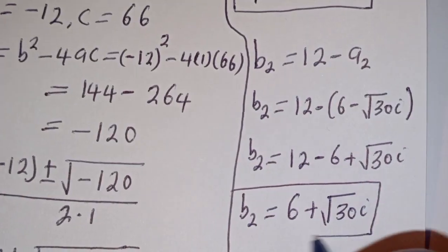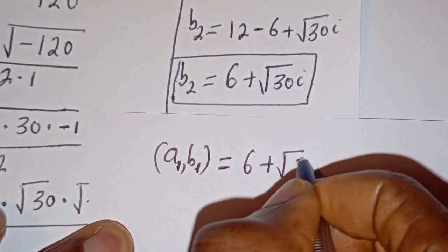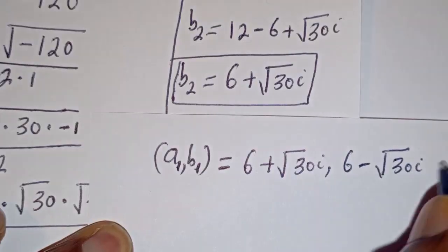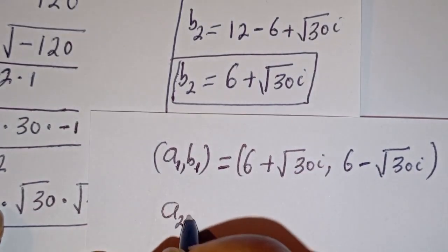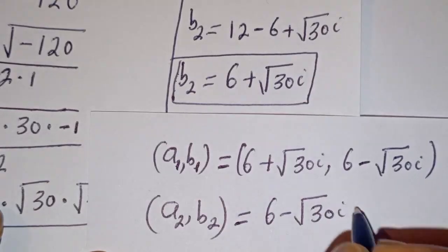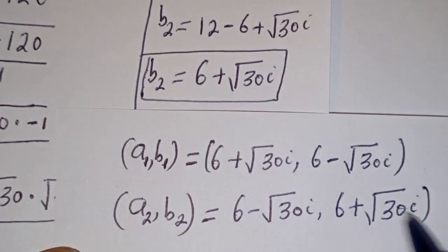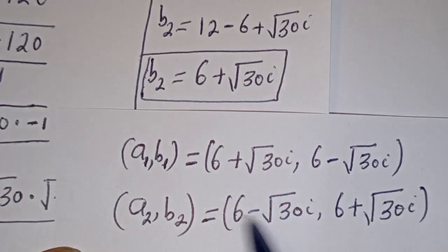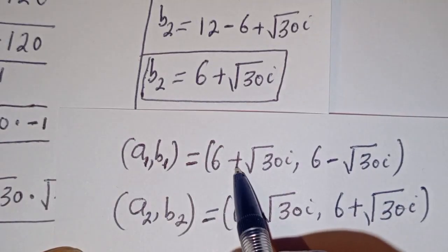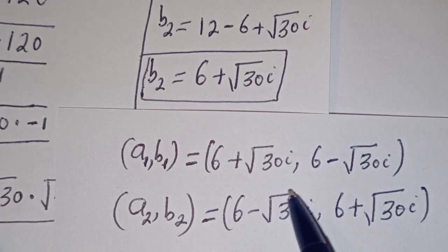So A1 equals 6 plus square root of 30 i, and B1 equals 6 minus square root of 30 i. We can see that the value of A1 is equal to the value of B2, and the value of B1 is equal to the value of A2. Let's check to confirm if this answer is right.